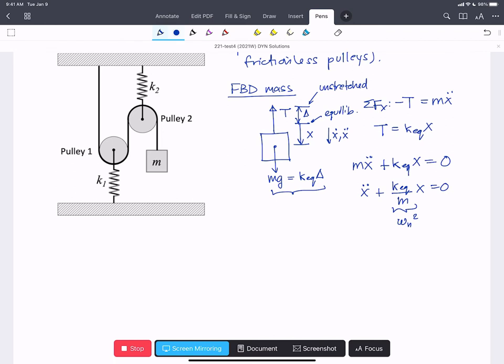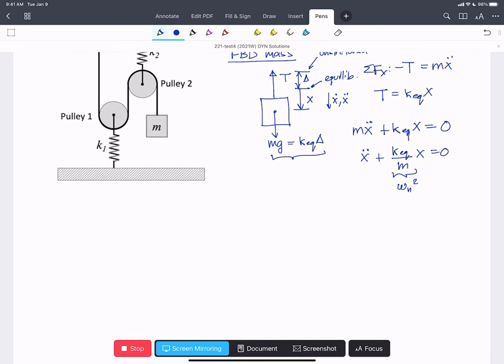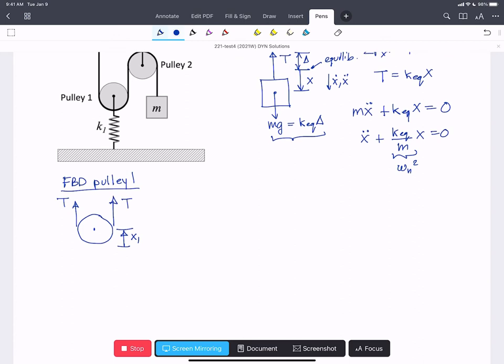We're going to do that by doing free body diagrams of both pulleys. So if we look at pulley one, when the mass goes on, the pulley is going to move upwards. So it will have some motion, x one, due to the application of the mass.